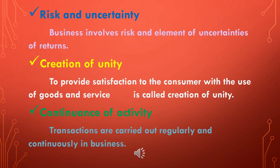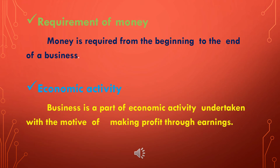The sixth characteristic is the requirement of money. Money is required from the beginning to the end of a business. Money is needed to manufacture finished goods from raw materials in a factory, and also by traders to purchase goods. From the initial stage, investment is needed — purchasing raw materials, various goods, and covering various costs. Many financial needs arise throughout business activities, so business requires different types of finance.